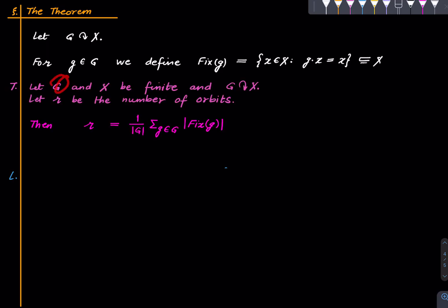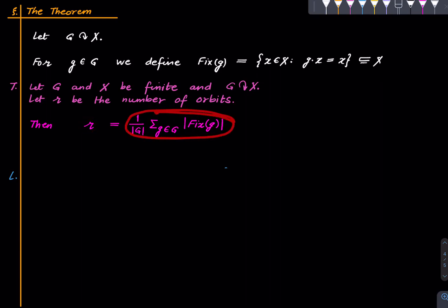The theorem says: suppose we have a finite group and a finite set with an action, and suppose it affords r orbits — the total number of orbits is r. Then one can compute the number of orbits via the formula: r = (1/|G|) · Σ_{g ∈ G} |Fix(g)|. This is the main theorem of this lecture, and in the next lecture we will see applications of it.